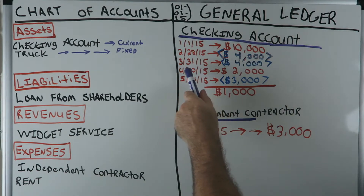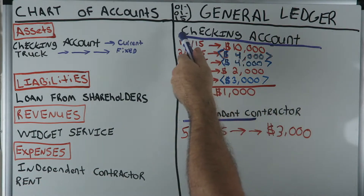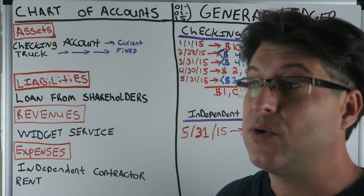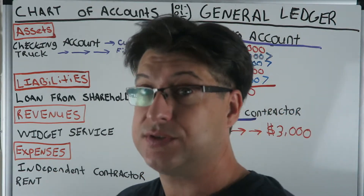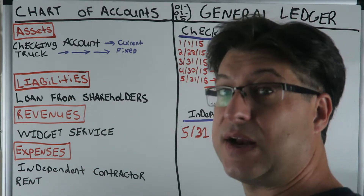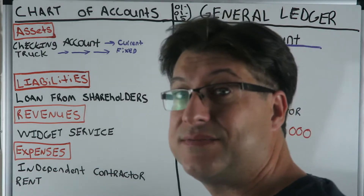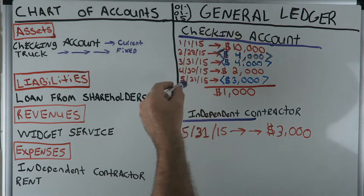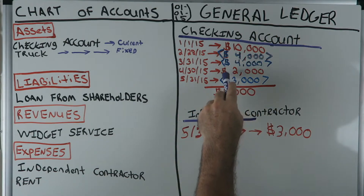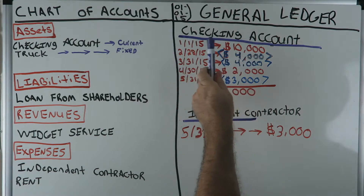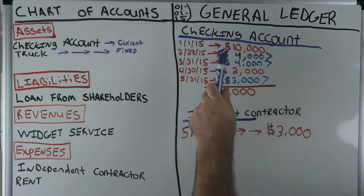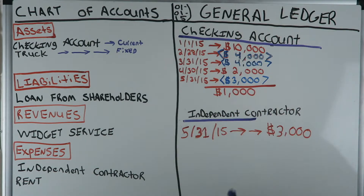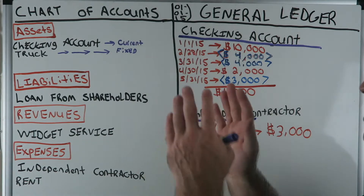In our checking account, we've had activity on 1/1/15, 2/28/15, 3/31/15, 4/30/15, and 5/31/15 — every single journal entry we've used the checking account. That's why I always say: if you can figure out where the cash is going, you'll get about half the journal entry right. On 5/31/15 there's a negative three thousand dollars entry, and if you add and subtract every journal entry, that leaves us with one thousand dollars in our checking account. Independent contractor account: three thousand dollars.